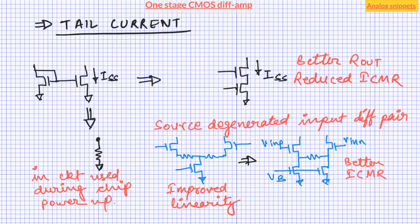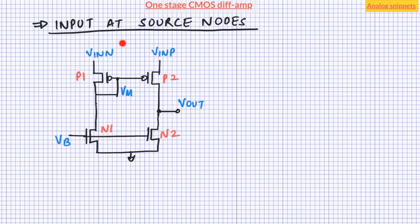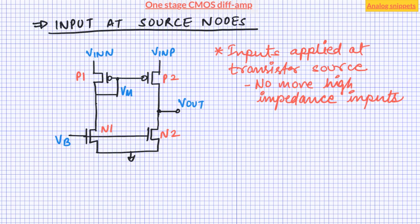As a last example, we look at an amplifier topology which differs from others in two aspects: the inputs are applied at the source terminal of the input diff pair, and the amplifier is not biased by a tail current. Since inputs are at the source terminal, they are no longer high-impedance nodes and need some current-driving capability. This topology has been used to compare two supply voltages, which are inherently low-impedance, high-drive nodes and have no problem driving these inputs.